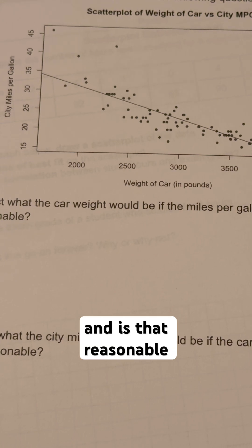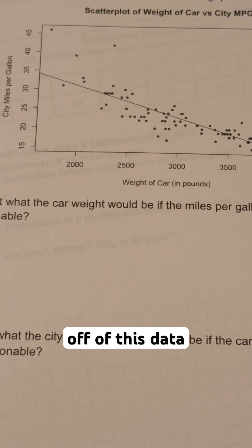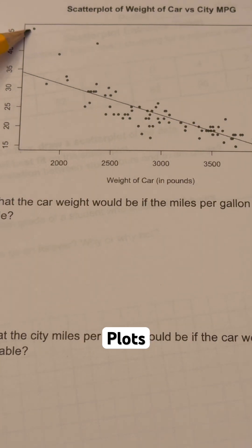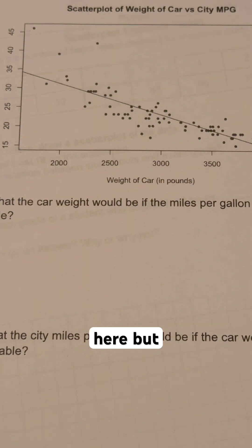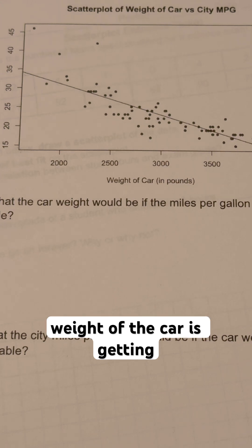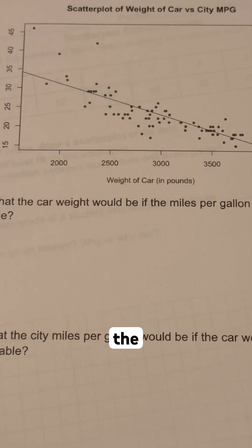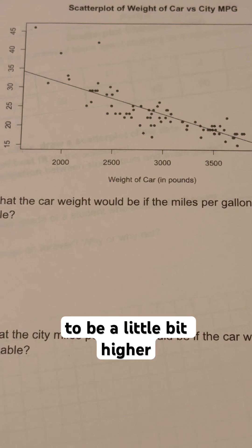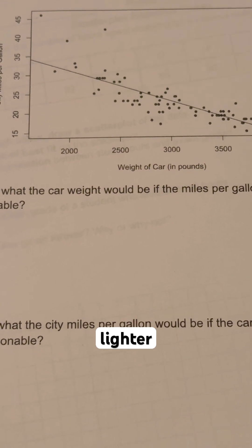And is that reasonable? Yes, because based off of this data you can see — there are some scatterplot points really high up here and down here — but generally speaking, this is going in a negative direction. So as the weight of the car is getting higher, the gas mileage is going down. You would probably expect the gas mileage to be a little bit higher for a lighter car.